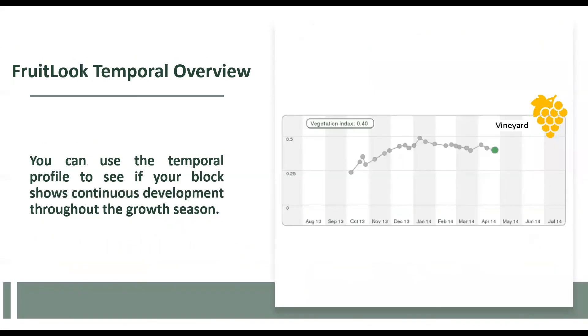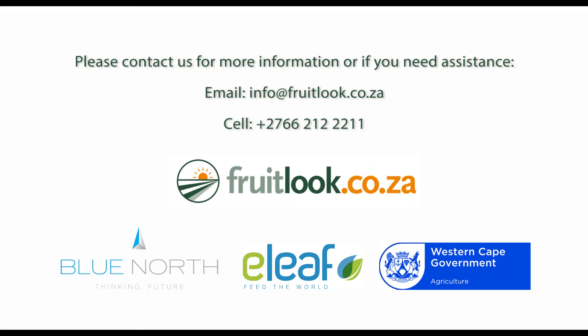You can use the Fruitlook temporal profile to see if your block shows continuous development throughout the growth season. If a strong decline is visible and no changes have been made in your block management — for example, no extensive pruning — this can be cause for concern. Please do contact us if you have any questions on NDVI or any other aspect of Fruitlook. Thank you.